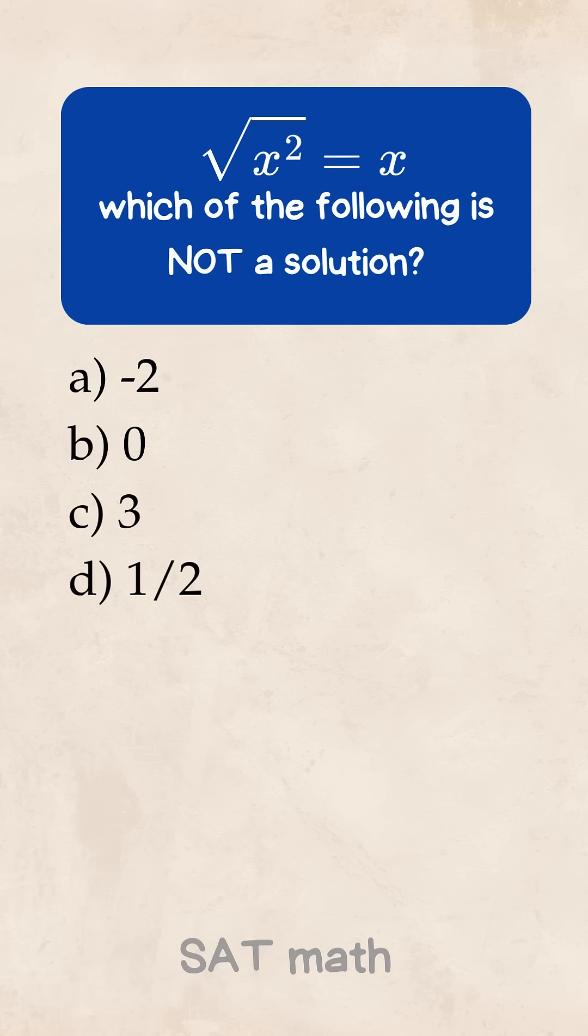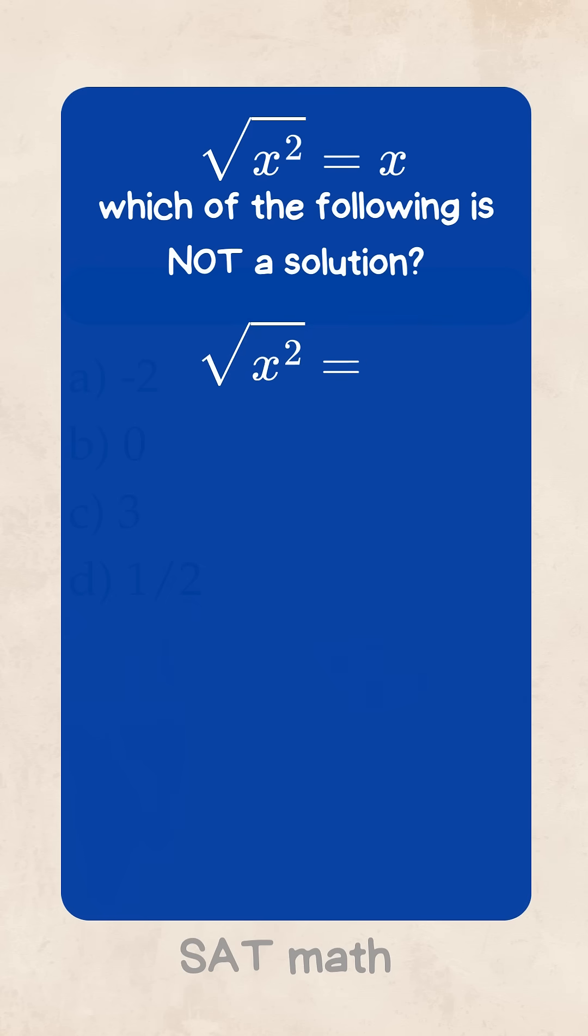Okay, now listen close. Most people look at square root of x squared and think, that's just x, but nope, not always. The square root of x squared is the absolute value of x. That means it's always positive.